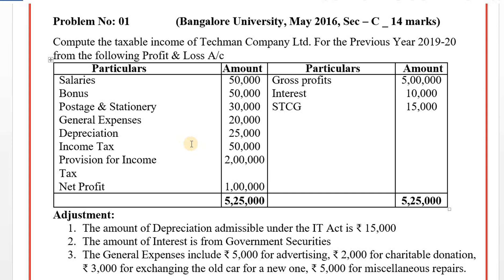As seen through the profit and loss account, we can determine whether books of accounts are prepared under the mercantile system or accrual system. In the mercantile system, starting with net profit, we add 4 items and deduct 4 items. First, inadmissible or disallowed expenses and losses are added. On the debit side, we decide which items are admissible and which are inadmissible — admissible we ignore, inadmissible we add back.